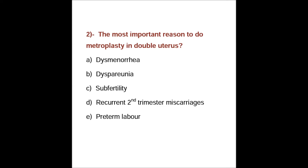So what happens is the uterus expels the baby. The most complications occur in septate uterus, followed by arcuate or bicornuate uterus, and rupture occurs most in unicornuate uterus. So these are all relevant points for this question.